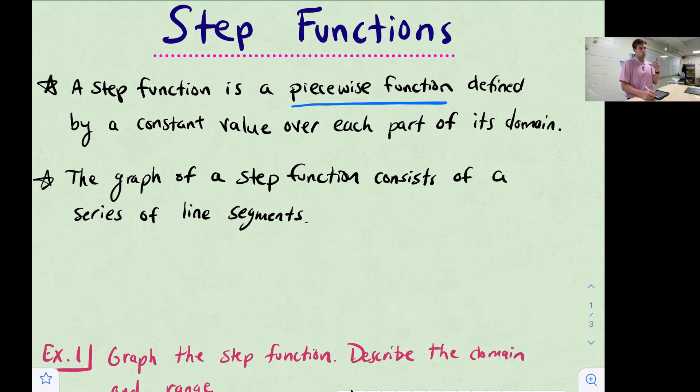We've talked about that's y equals a number, right? So like f of x equals two, f of x equals three. So that's just going to give us horizontal lines. That's kind of why it's called a step function, because when you look at the graph, it's like a series of steps, or a series of line segments.